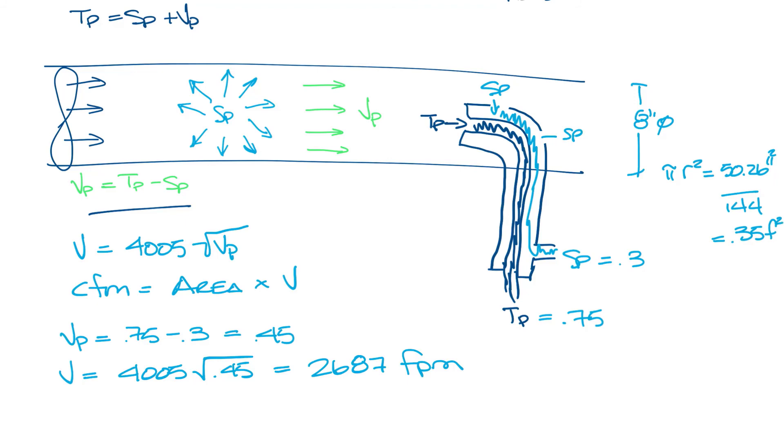So now let's go over here to our CFM equation. CFM equals area, 0.35, times velocity, 2687 feet per minute, and we get a CFM of 940 CFM.